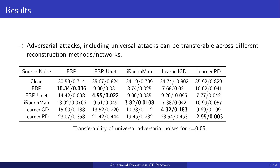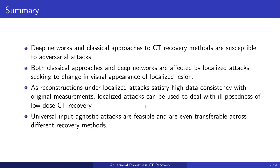Further, we also found that adversarial attacks, including universal perturbations, are feasible and even transferable across different recovery methods. We do observe a significant drop in reconstruction quality even using perturbations from a different method. In summary, we evaluated robustness of CT recovery to different types of attacks, showed the utility of localized attacks to deal with ill-posedness, and our universal attacks and transferability results demonstrate the feasibility of black-box attacks on CT recovery.